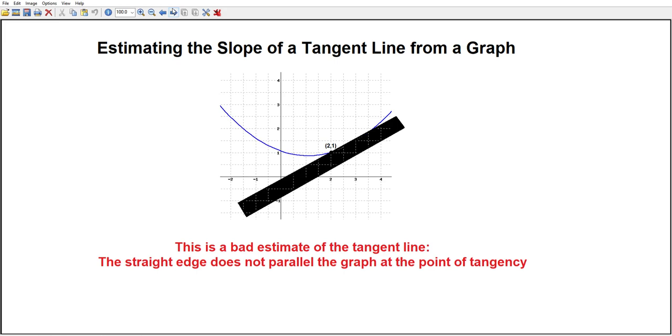Now first, we're going to look at a not particularly good estimate, and the straight edge has been placed so it passes right through the point 2, 1, but as you can see, the slope that we're getting is too big.